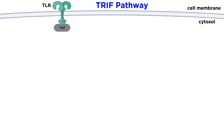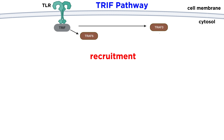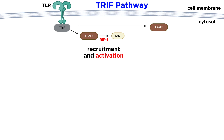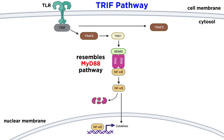TRIF is the other main adapter protein for TLRs. TRIF recruits TRAF6 and TRAF3. TRAF6 recruits RIP1, which activates TAC1. From here, the pathway looks similar to the MyD88 pathway, and results in NF kappa B activation.